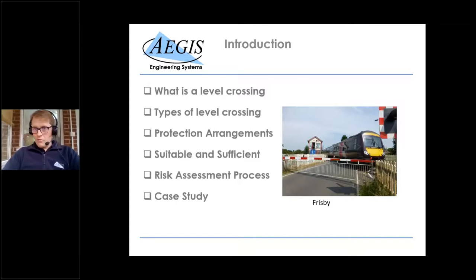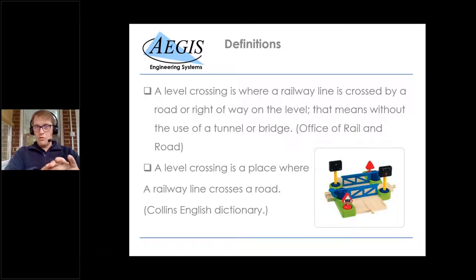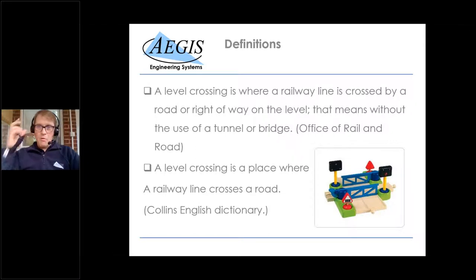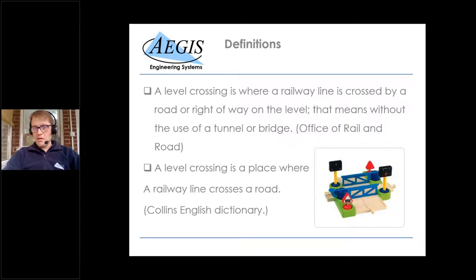Hopefully all 96 of you can follow me all the way through. Definitions: a level crossing is where a railway line crosses the road or right of way on the level, meaning without use of tunnel or bridge. That's the Office of Rail and Road — the ORR — definition. It differs slightly from the dictionary definition, which is simply a place where a railway crosses the road. The difference is the 'without tunnel or bridge' qualifier.